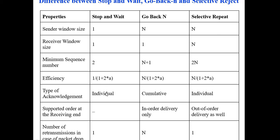Acknowledgement, individual acknowledgement for every frame is required in stop and wait ARQ. Whereas cumulative acknowledgement is sufficient for go back N and selective repeat. Supported order at the receiving end, in order delivery only in go back N. Here out of order delivery also can be considered. Number of transmissions in case of packet drop, stop and wait ARQ only one transmission, go back N is N, and selective repeat is 1. Thank you.